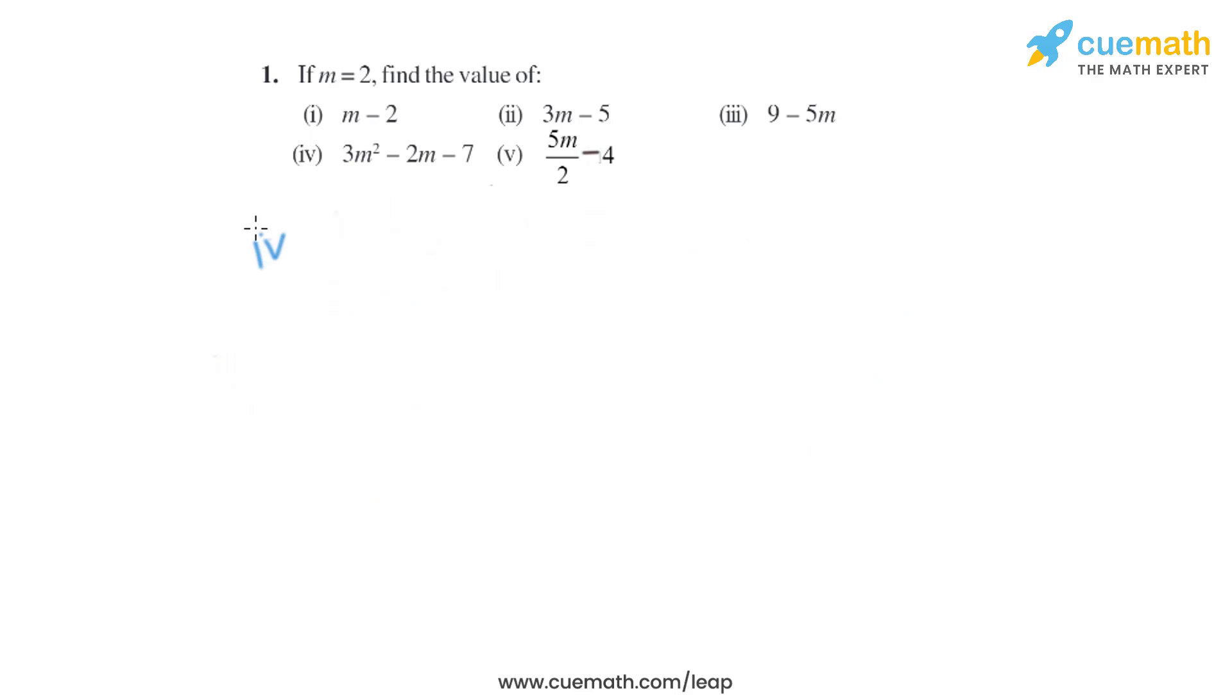Which is same as minus 1. Now let's move on to the fourth part. The expression that is given is 3m square minus 2m minus 7. So when we put the value of m equals to 2, it will be 3 into 2 square minus 2 into 2 minus 7.